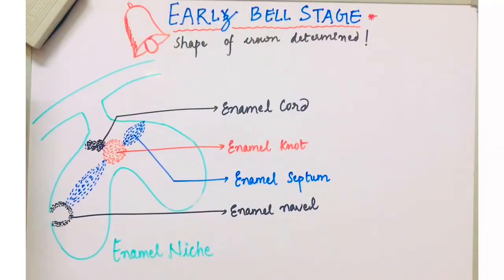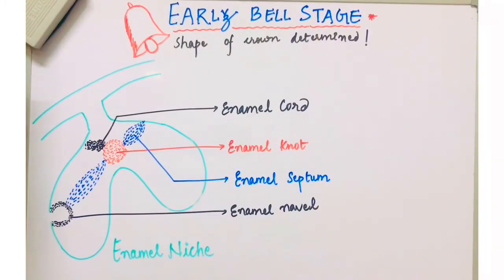Hello everyone. Today's topic is the early bell stage, which is the third stage of tooth development. We've already studied the bud stage and cap stage, so next let us proceed to the early bell stage. In the bell stage of tooth development, there is histo-differentiation and morpho-differentiation taking place. It is divided into two: early bell stage and advanced bell stage. It is in the bell stage that the shape of the crown is determined — whether the tooth has to be incisor, canine, premolar, or molar.